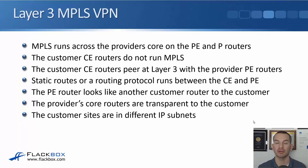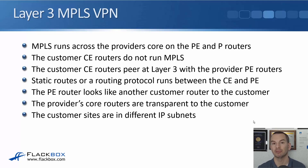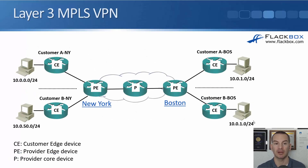The customer CE routers peer at Layer 3 with the provider PE routers, exchanging routes with the provider router. They can use either static routes or a routing protocol. The PE router looks just like another customer router to the customer — the provider's core routers are transparent to the customer. The customer sites are in different IP subnets; customer A has 10.0.0.0/24 on the top left and 10.0.1.0/24 on the top right.